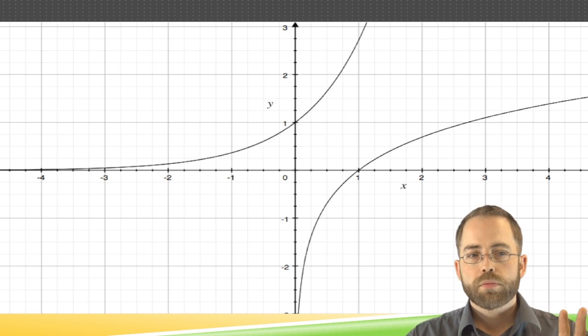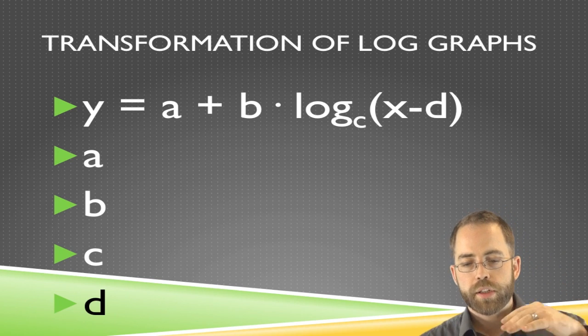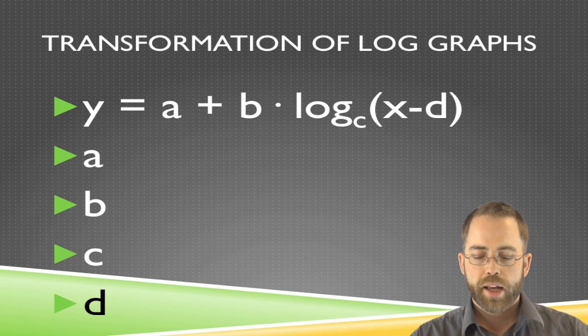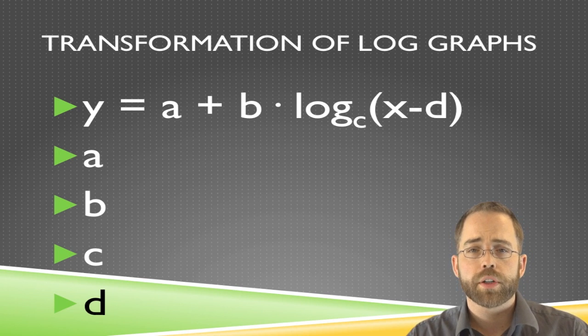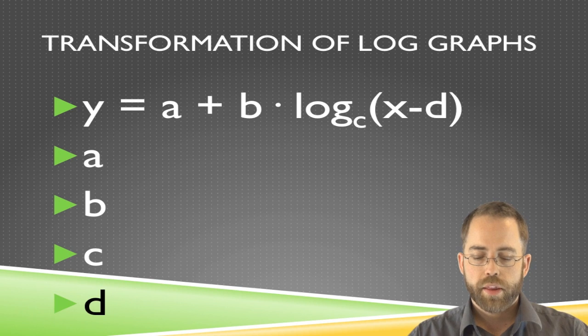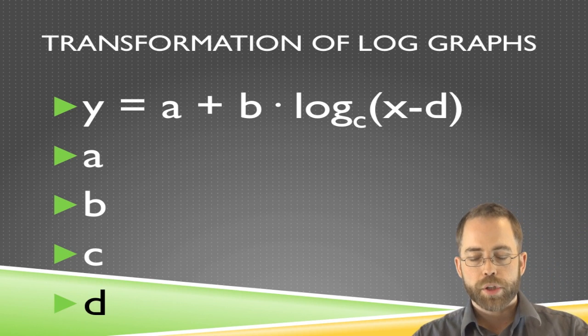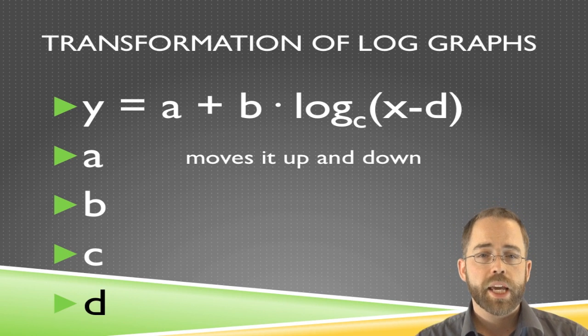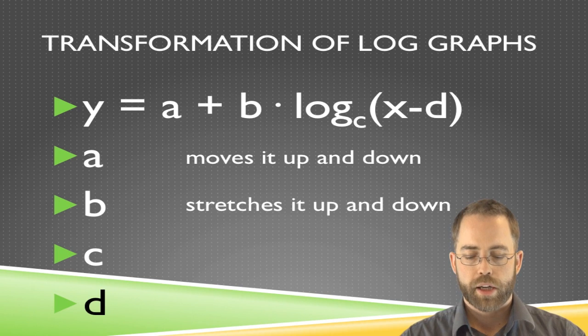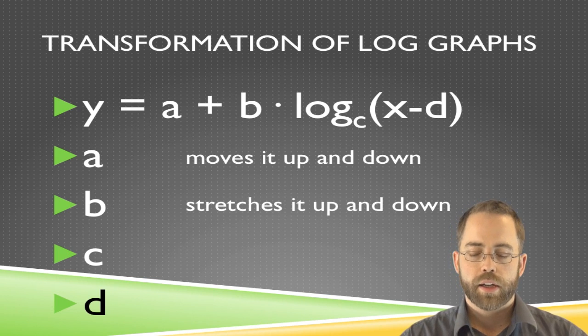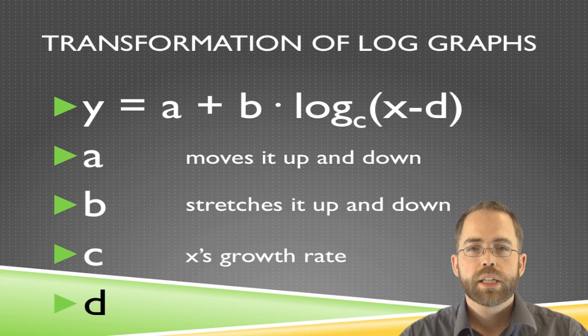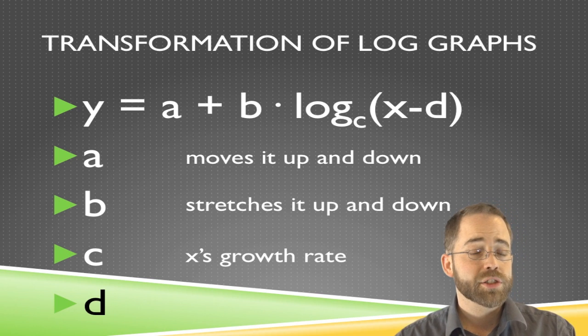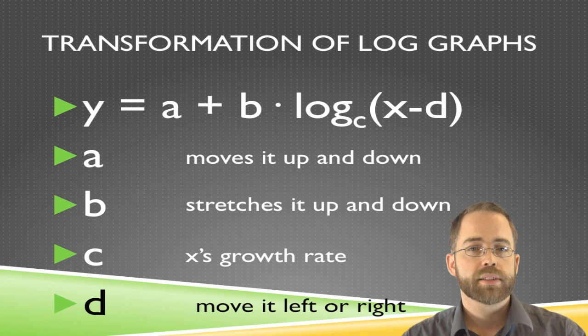Think about that thing we just said. You've got an asymptote getting forever closer to 0 but never quite making it. Now we're going to do what we've always done with functions since chapter 1: move them around. The a value is going to move it up and down. When you've got addition on the outside, that moves you up and down. Multiplication on the outside stretches you up and down. The base is going to be the growth rate, how fast is it growing. Then we might move it left or right, which essentially moves the asymptote. That's the key feature there.